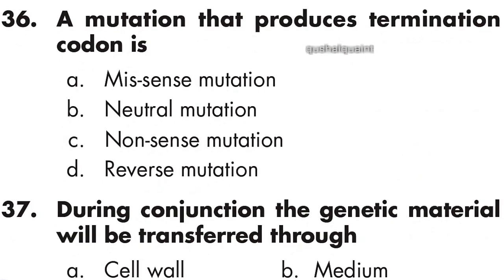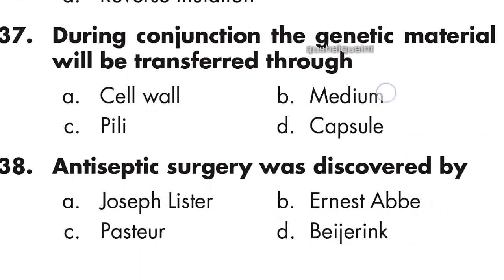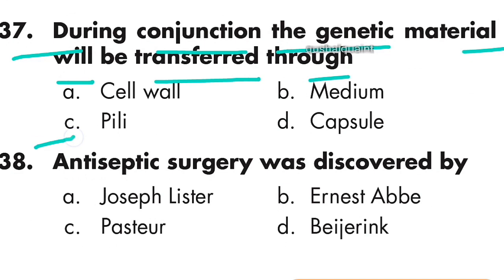Question number 36: A mutation that produces a termination codon, leading to premature termination of translation, is called a nonsense mutation. Option B is right — nonsense mutation. Question number 37: During conjugation, genetic material is transferred through pili. Option C is right — pili.